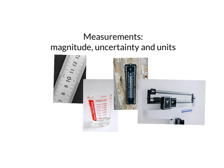In addition, each measurement that we make has particular units associated with it. The units of a measurement tell us what type of measurement we're making. For instance, if I wanted to measure the distance between two points, I would use a ruler, and that distance measurement would be in terms of centimeters, meters, inches, or some other unit of distance.